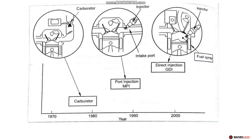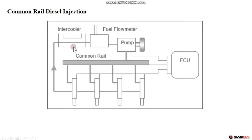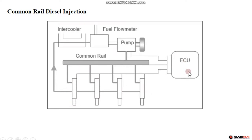CRDI is a Common Rail Direct Injection system. Looking at the technology evolution from ancient times to today, we can understand why we use this system. In CRDI, there is an Electronic Control Unit — the ECU — which is the piece that controls the electric signals and timing for fuel delivery.